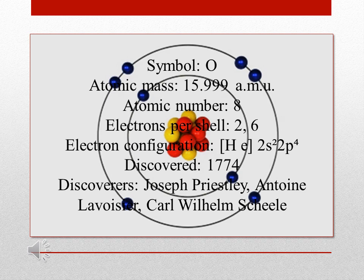Oxygen, symbol O, atomic mass 15.999 amu, atomic number 8, electrons per shell 2, 6, electron configuration...